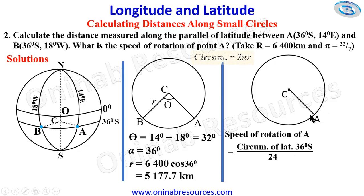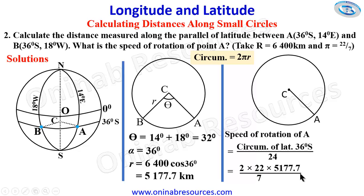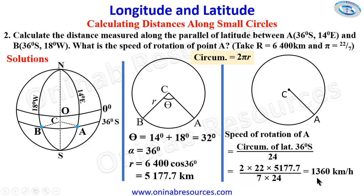The circumference of a circle is 2πr, so we have: 2 × (22/7) × 5177.7, then divide by 24. Inputting this into the calculator, we get 1360 kilometers per hour. This is the speed of rotation of point A due to the rotation of the Earth. That's all for problem two.